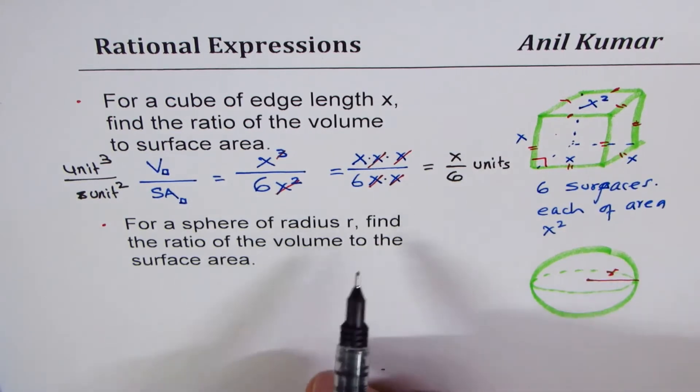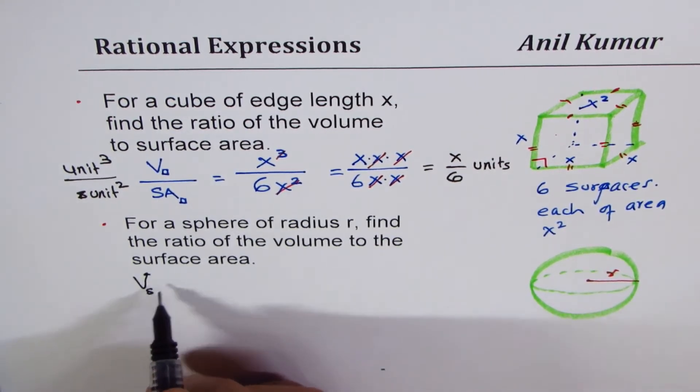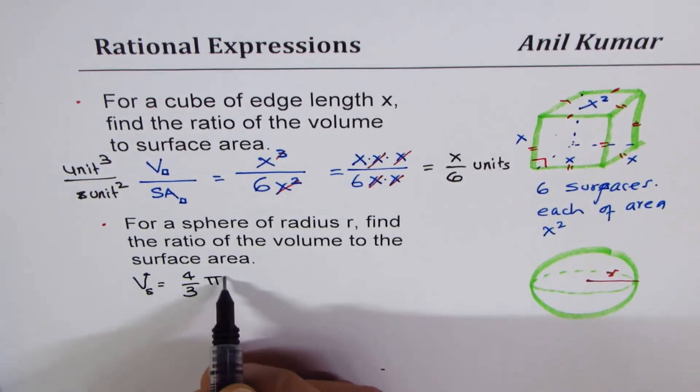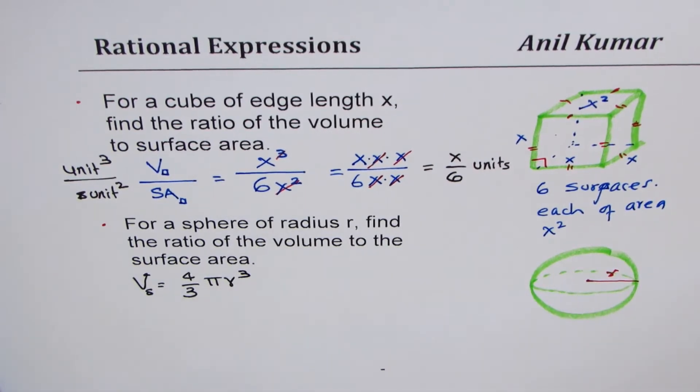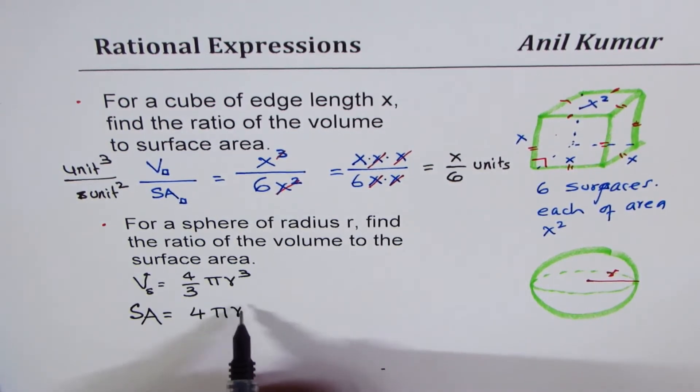Now for this sphere, we have to find ratio of volume. So what is the volume of sphere? Volume of sphere is 4 by 3 pi r cube. And what is the surface area? Surface area is 4 pi r square. That is the surface area. Now you can pause the video. Find the ratio of volume to surface area.